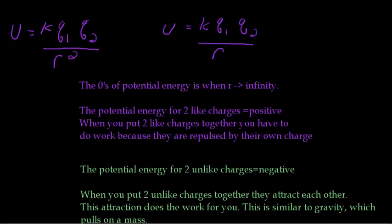The zeros of the potential energy are when r approach infinity, and that's just sort of intuitive. When the distance between them becomes an infinitely large number, you end up with zero.